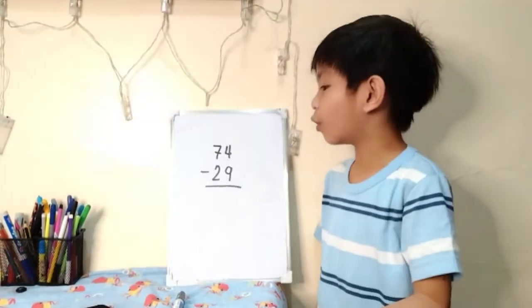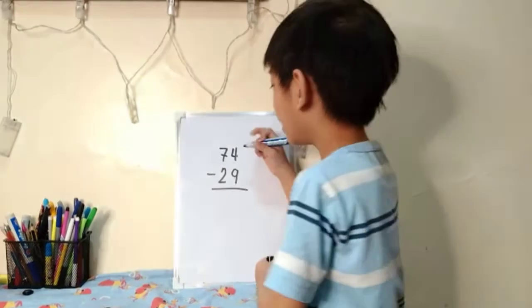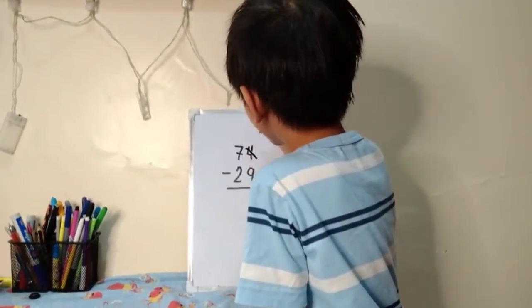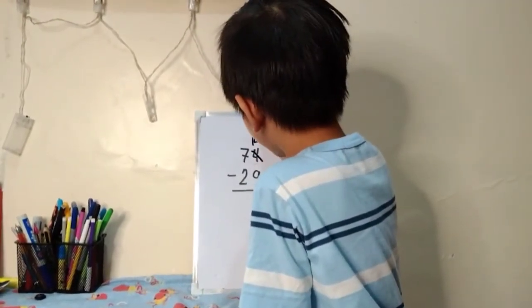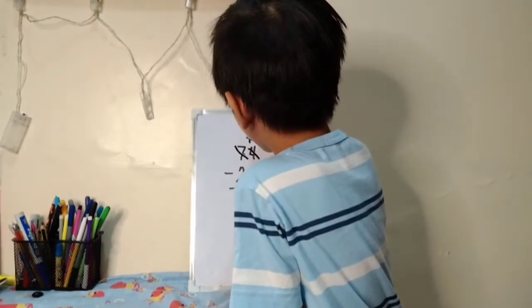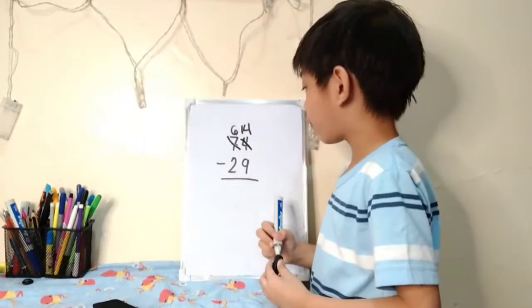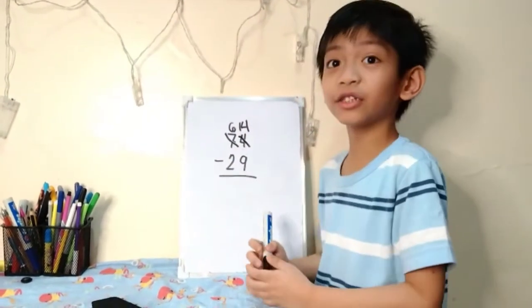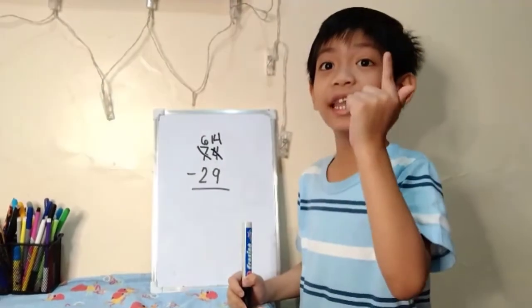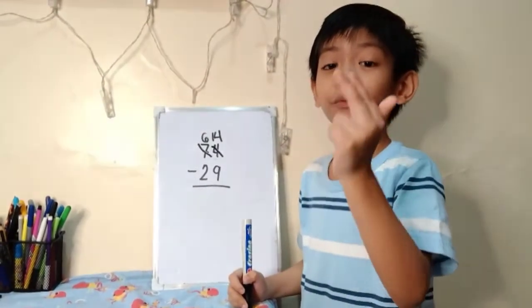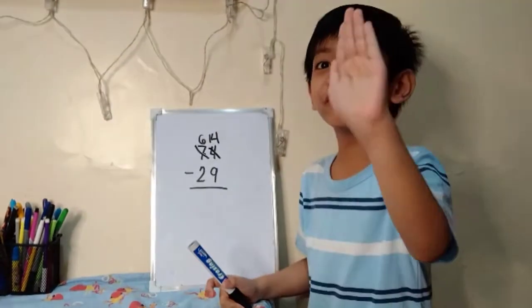So, we're going to borrow 1 from 7. And let's add this. It's going to be 14. We're going to make 7 become 6. 14 minus 9 is... 5.